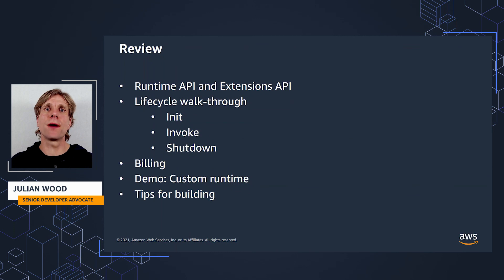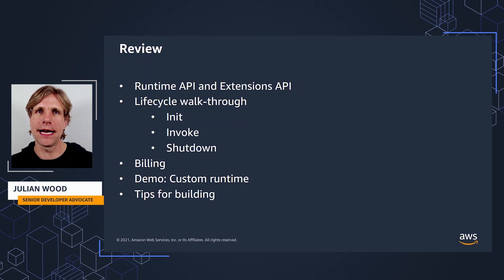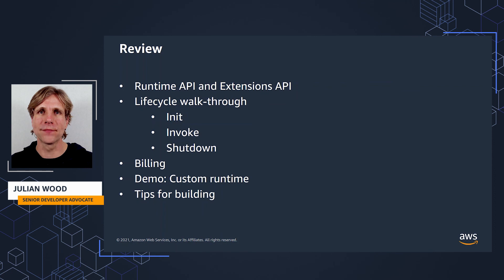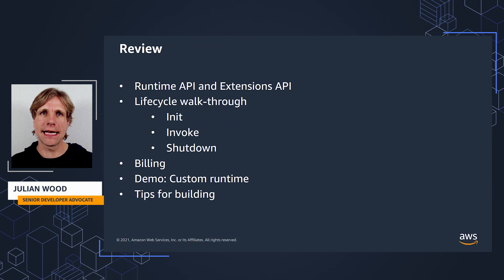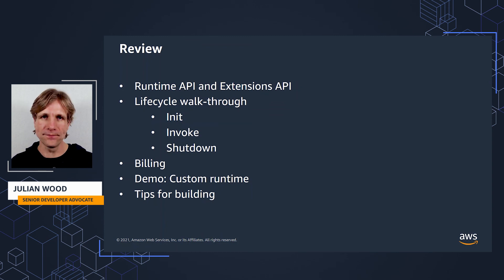To review what we've been through: this was part two of the super deep dive into how to use the runtime and extensions APIs to build your own extensions or even just to understand exactly how Lambda works under the hood. I went through the Lambda lifecycle in detail showing the changes to init, invoke and shutdown and how extensions can plug into Lambda. I showed the API calls and how the runtime, extensions and functions interact. I went through what billing looks like and then showed the demo you can easily deploy yourself to see all the stages and look through the logs to understand how it all fits together. I finished with some tips on things to think about when building extensions.